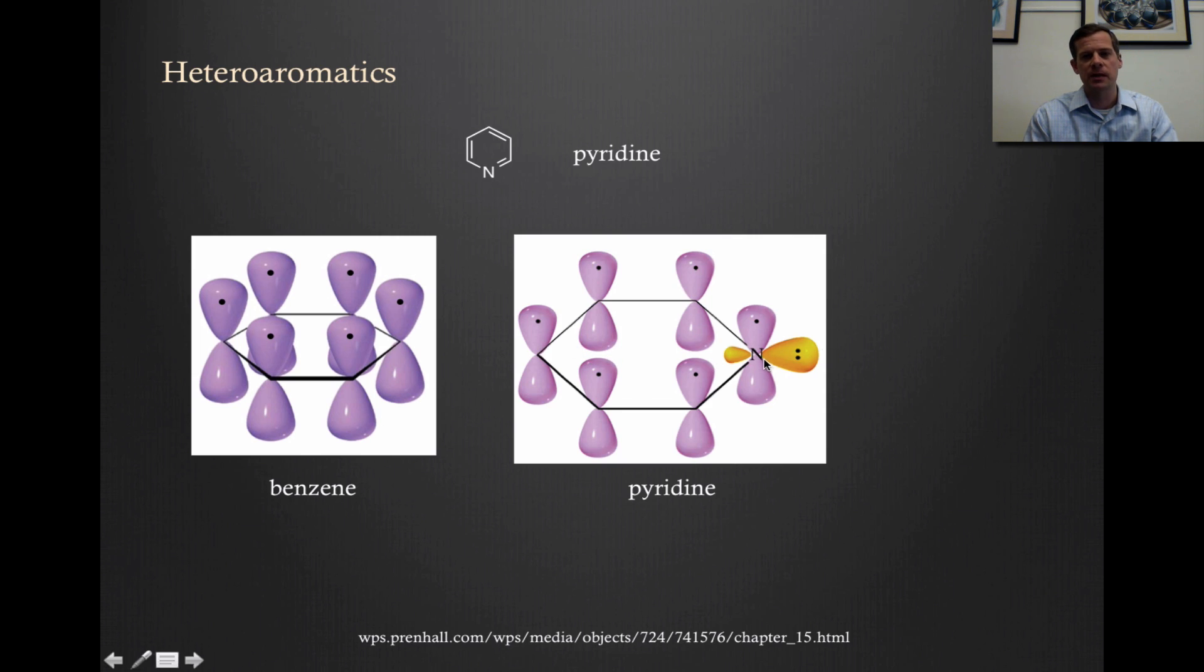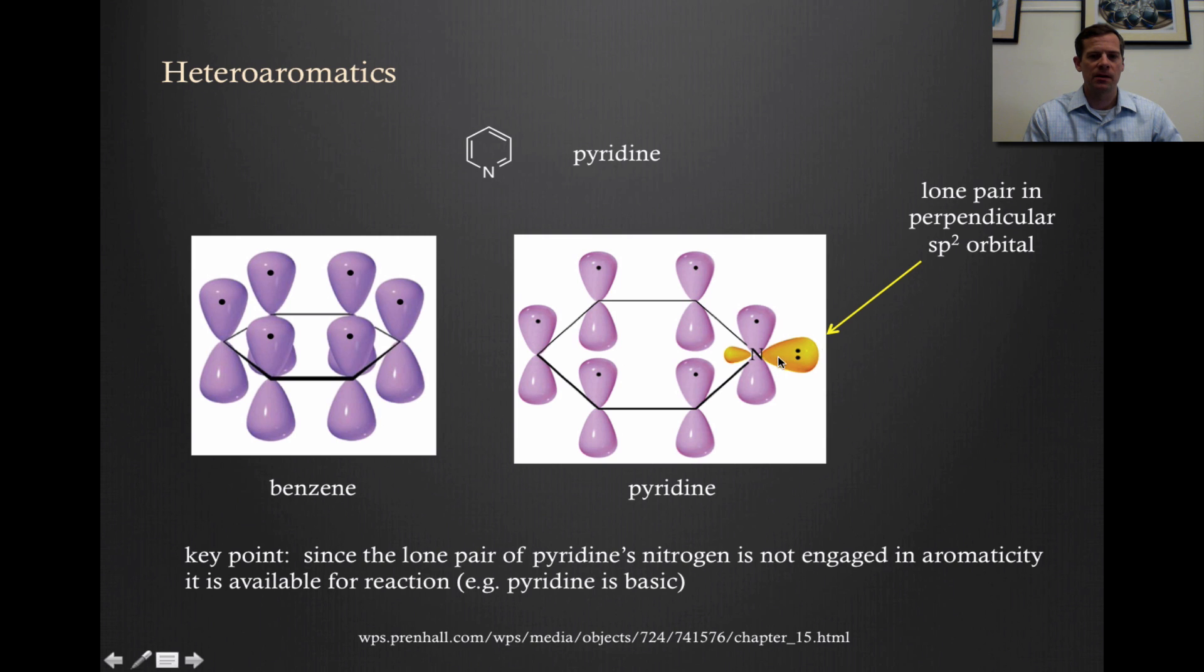That nitrogen is also going to be donating a p orbital to this six atom conjugated pi system, a p orbital and a single electron. The difference here is that with benzene, that carbon had a bond to a hydrogen, each carbon has its own hydrogen. In the case of nitrogen, we're going to have a lone pair instead. It's already engaged in three bonds in pyridine. In the case of pyridine, that lone pair isn't needed for aromaticity and so it's actually orthogonal to the pi system. This is the important part about pyridine. There's a lone pair in a perpendicular SP2 orbital here. What that means is that the lone pair of pyridine's nitrogen is not engaged in aromaticity and is thus available for reaction.